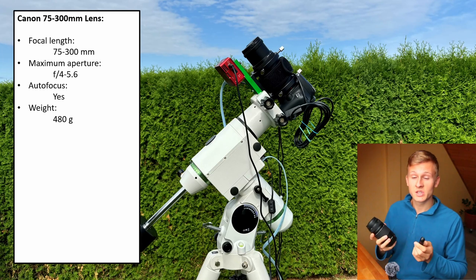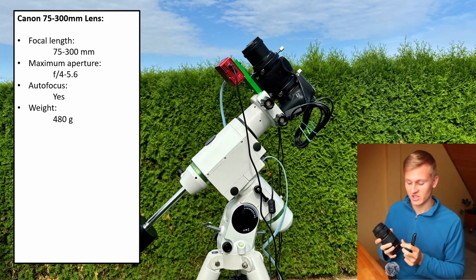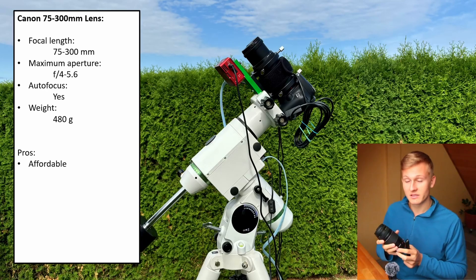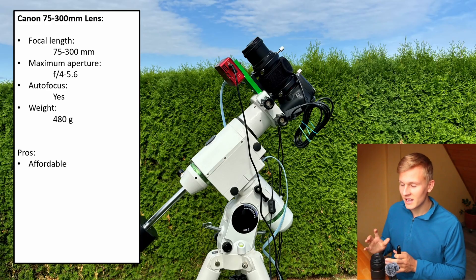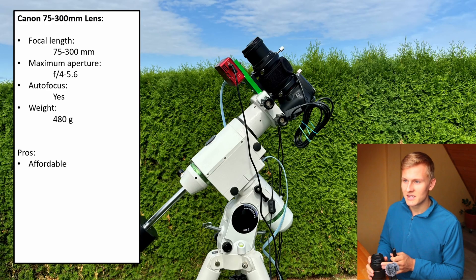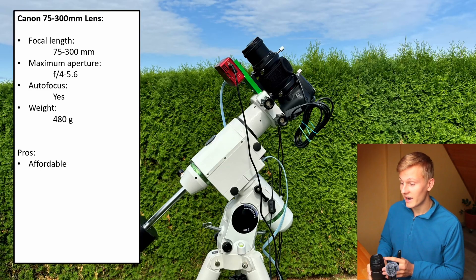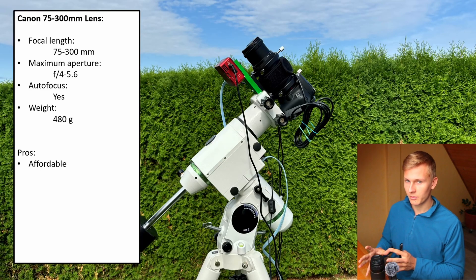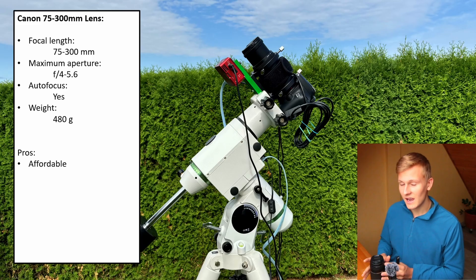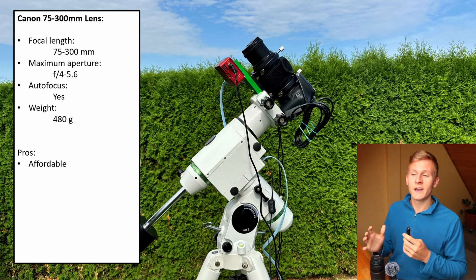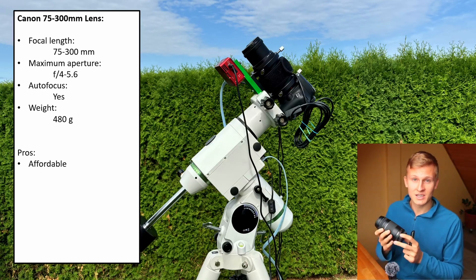Now I'd like to go over to the advantages and disadvantages, starting with the advantages. The very first advantage is that this lens is affordable. You can invest thousands of euros for a zoom lens with a focal length between 75 and 300 millimeters, but in this case this lens is definitely affordable and can still capture great images for deep sky astrophotography.